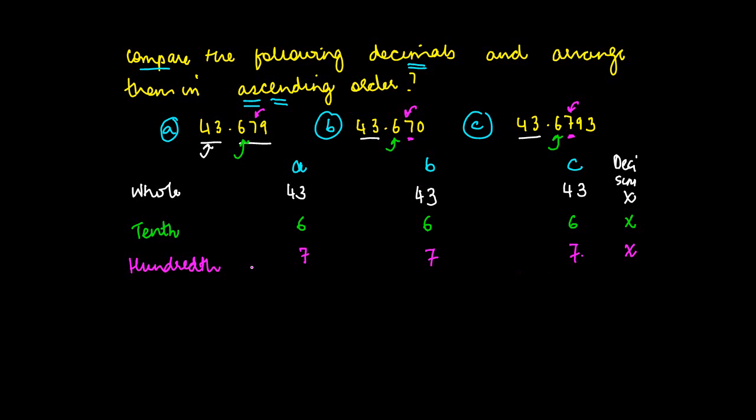Moving on to the thousandth value - it's 9 in a, it's 0 in b, and it is 9 in c. So clearly amongst these three, we know 0 is the least one, so this has to be the smallest, while 9 and 9 are equal.